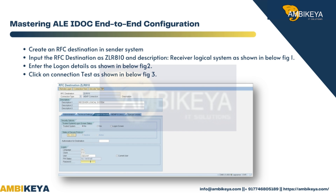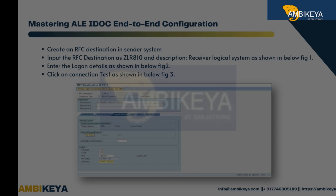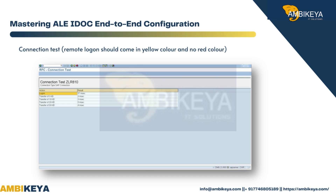Step 3: Create an RFC destination in the sender system. Input the RFC destination as ZLR810 and description as receiver logical system, as shown in figure 1. Enter the logon details as shown in figure 2. Click on connection test as shown in figure 3. The remote logon result should appear in yellow color — no red color.